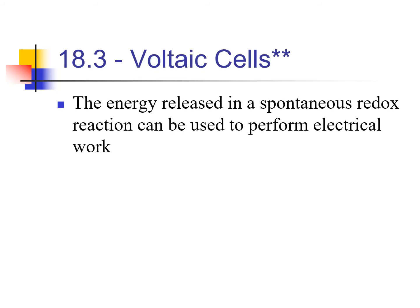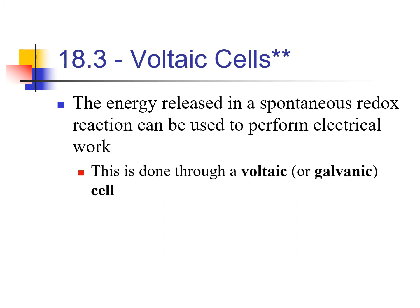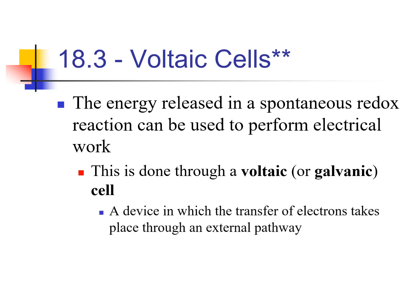Now in section 18.3, we get into the fun stuff: voltaic cells. Energy released during a spontaneous redox reaction can be used to perform electrical work — electricity. This is done through what's called a voltaic or galvanic cell — in short, a battery. It's a device in which the transfer of electrons takes place through an external pathway. A voltaic cell is powered by a redox reaction, but we do some engineering to make those electrons move through an external pathway so we can channel where they're moving.